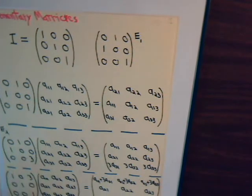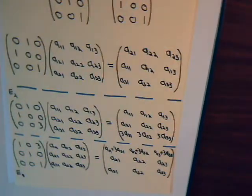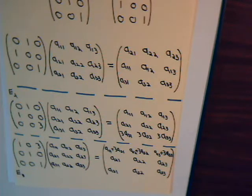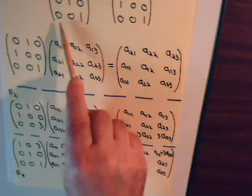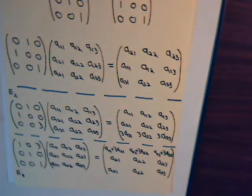For the type-two elementary matrix, it's going to have a value of some constant. As we said in the previous video, if you multiply any row of a matrix by a number, it multiplies the determinant by that number. This specific type-two elementary matrix was obtained by multiplying the third row of the identity matrix by three, so it multiplies the determinant by three — giving a determinant of three.